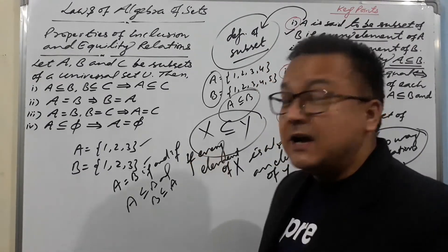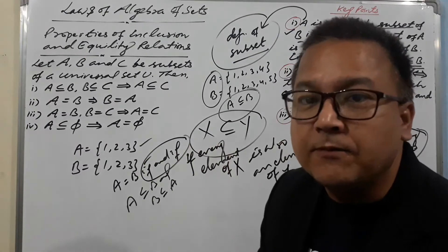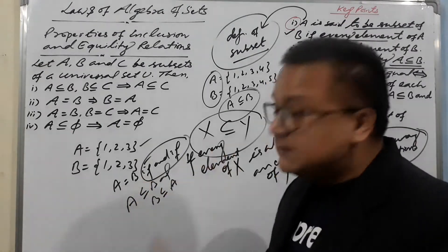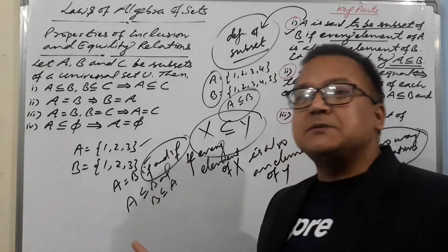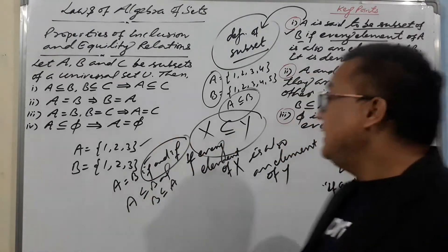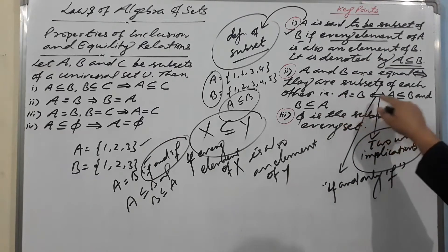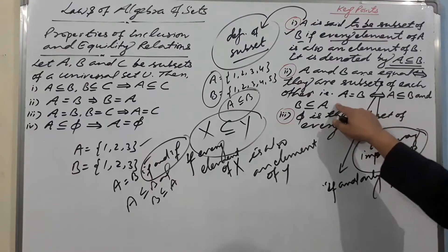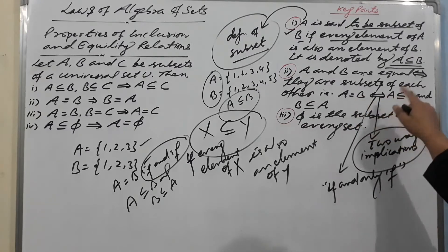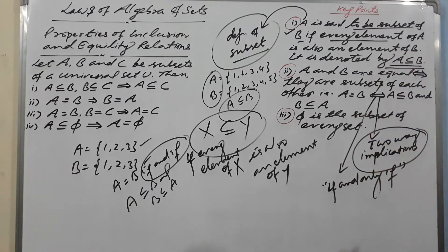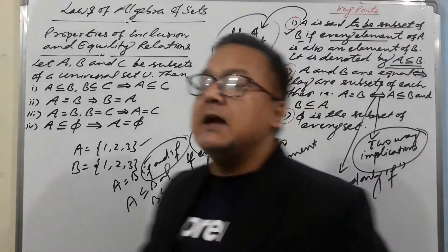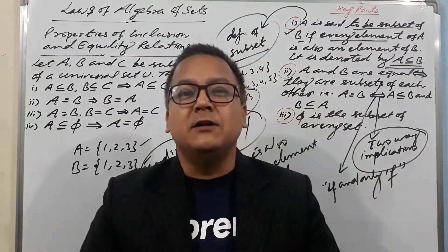The meaning of 'if and only if' here is: if A = B, then A ⊆ B and B ⊆ A; and also, if A ⊆ B and B ⊆ A, then A = B. So it works both ways — this is the meaning of 'if and only if.'